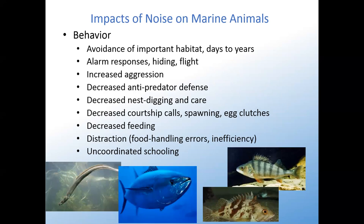Behaviorally, animals show avoidance of important habitat for days to years and often respond to noise as they would to a predator — an alarm response, hiding and flight, increased aggression, decreased anti-predator defense, decreased nest digging and care, decreased courtship calls, spawning and egg clutches, decreased feeding, distraction with mistakes in food handling and inefficient feeding, and uncoordinated schooling, which can have serious consequences.